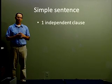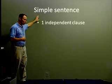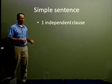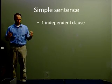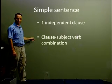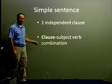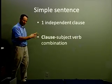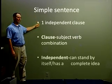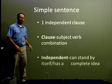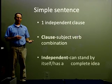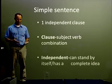Let's start with the simple sentence. The simple sentence has one independent clause. When you read this, the first question you probably ask yourself is: what is a clause? Well, a clause is a subject-verb combination — where I have a subject and a verb, put them together to get one idea or meaning. Then, when we talk about independent, what is independent? Independent means that it can stand by itself, and another way to say that is that it has a complete idea.